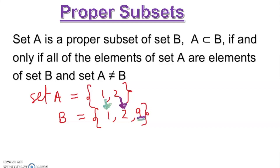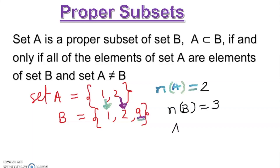If we look at the cardinality: n(A) is clearly 2, and n(B) is basically 3. So clearly A is not equal to B, therefore it satisfies the condition. As you can clearly see, they are not equal and therefore this is a proper subset.